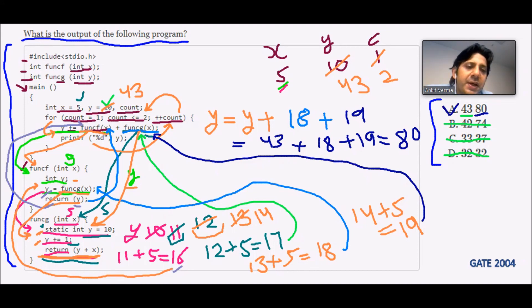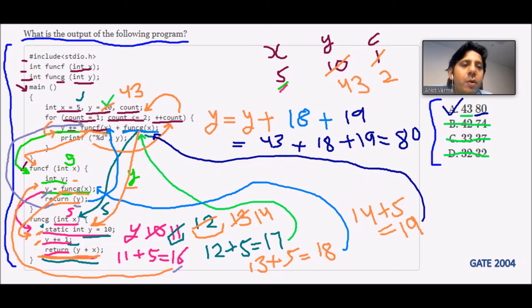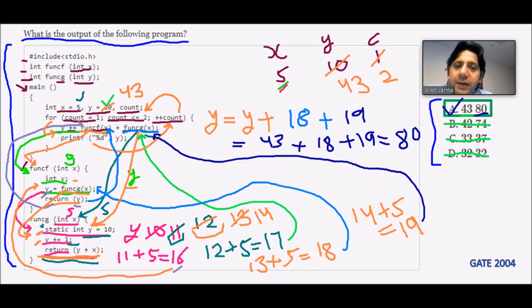The correct option is A (output = 80). In a competitive exam, once you confirm the first loop output matches option A's first value, you can be confident in selecting A without completing the full trace. Thank you.